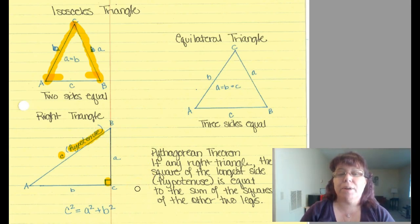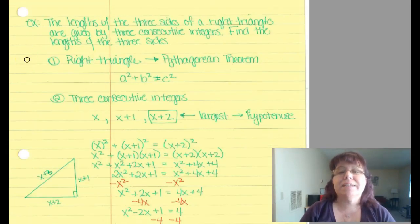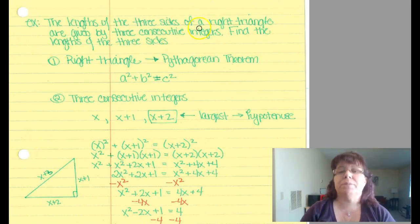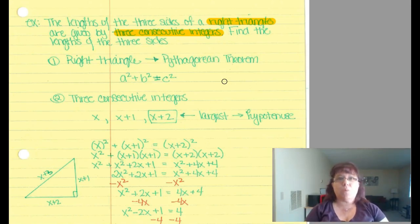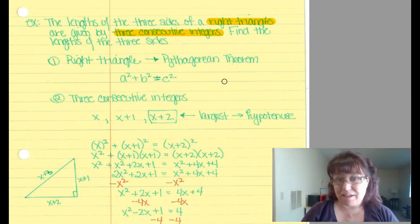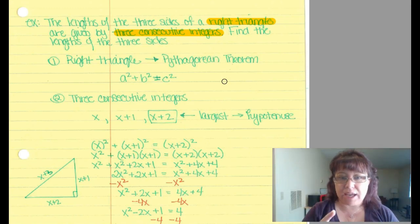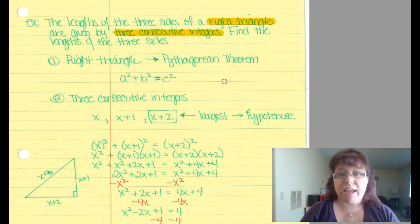Let's apply the Pythagorean theorem: the lengths of three sides of a right triangle are given by three consecutive integers — find the lengths of the three sides. Three consecutive integers starting at unknown X would be X, X+1, and X+2. For example, 10, 11, 12, or 45, 46, 47. No matter what X is, X+2 is the largest number — the hypotenuse, which is C.